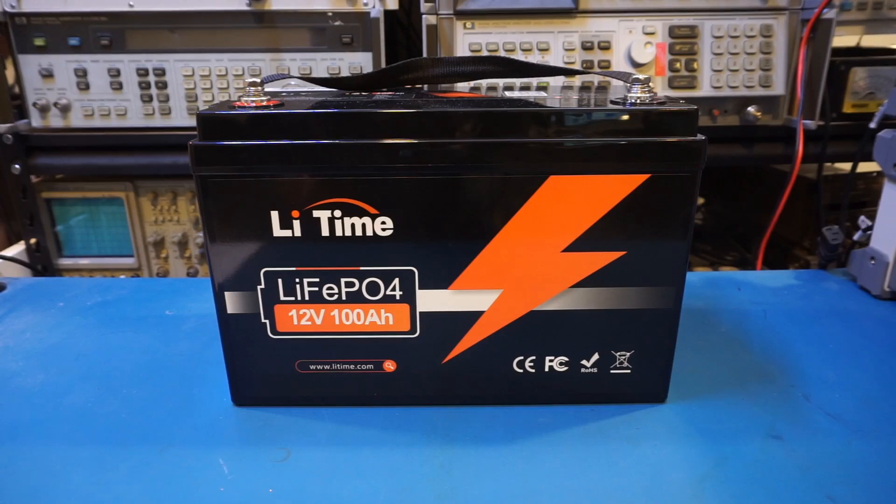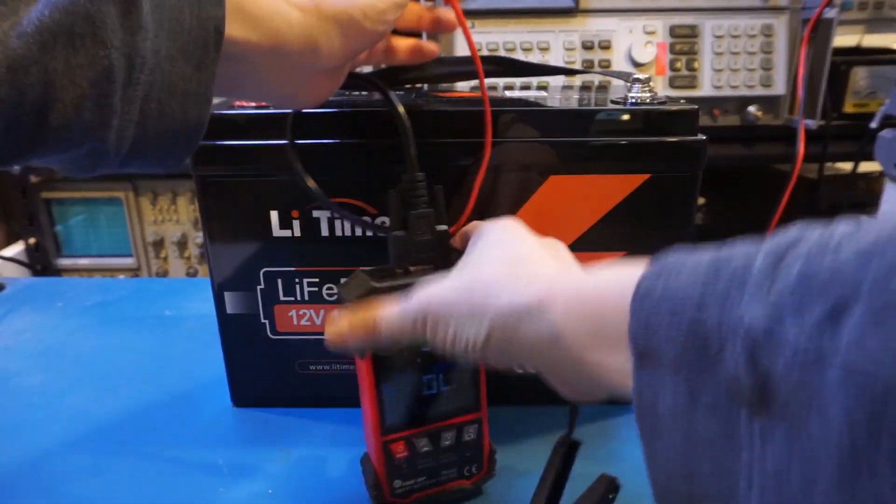After the discharge test, I have charged up the battery again. Now, let's verify the battery's internal resistance with an internal resistance tester. According to the specifications, the internal resistance should be less than 40mΩ. I'm going to use a couple of meters to test, just to verify the results. The first one is this Topton IR502. Let's take a look here.